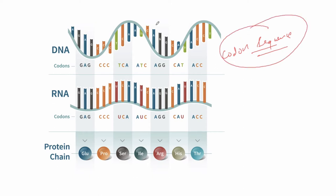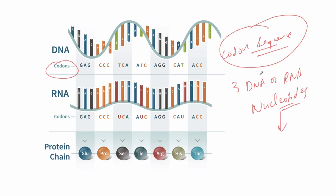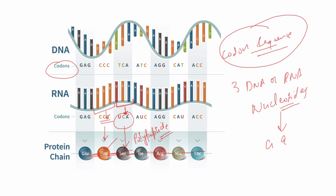A codon is a sequence of three DNA or RNA nucleotides that corresponds with a specific amino acid during protein synthesis. For example, the codon sequence CCC corresponds to the amino acid proline. These three nucleotides correspond to a specific amino acid, and these amino acids form a polypeptide chain. The specific sequence of amino acids is important for the specificity of proteins.